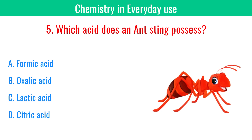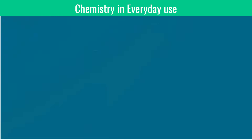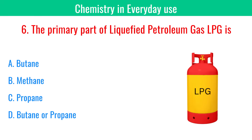Which acid does an insect possess? Formic acid. The primary part of liquefied petroleum gas, LPG, is butane or propane.